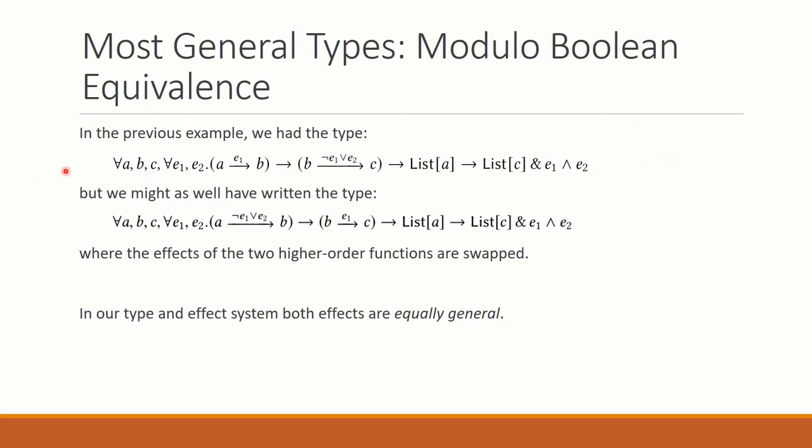So in this example, we had a type written in our implementation, but we can also write it here more formally in math. We have this very polymorphic type. And as it turns out, we could also have written the type in the following way. Here I've just swapped which effect on which arrow. An important point of our work is that these two types here are equally most general. That is, one is an instance of the other and vice versa.